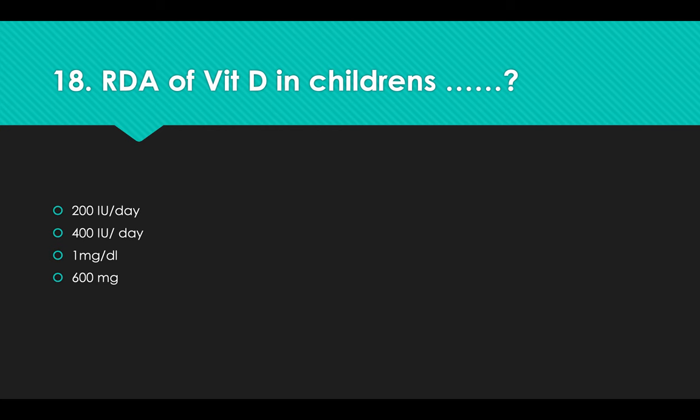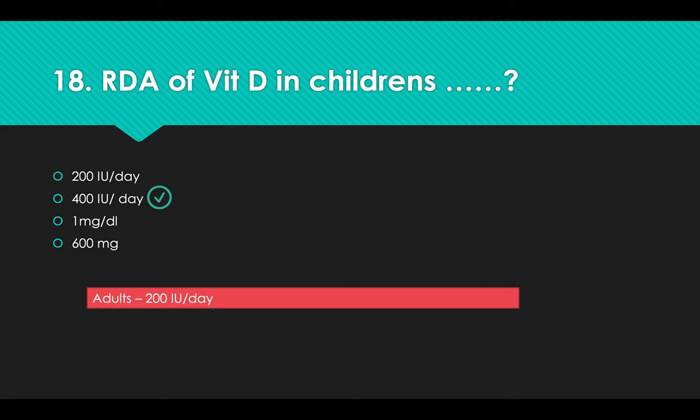Recommended daily intake of Vitamin D: Options include 1 mg per dl, 400 IU, and 600 mg. Answer: Option B, 400 International Units per day in children; 200 International Units per day in adults.